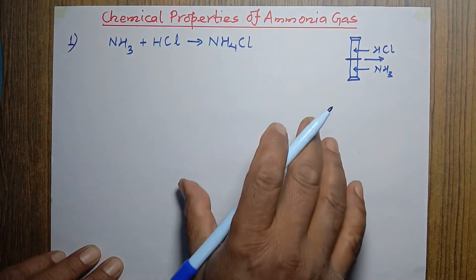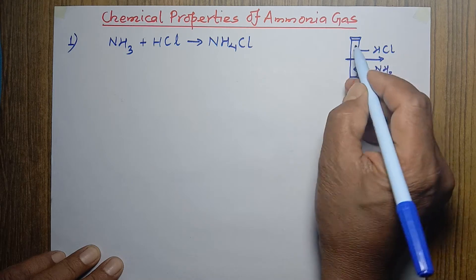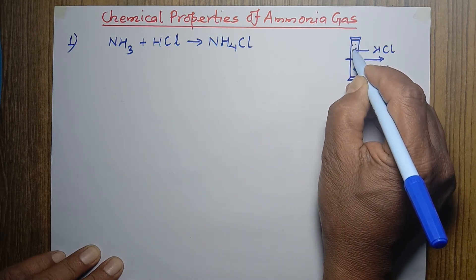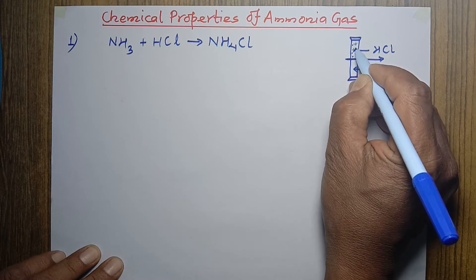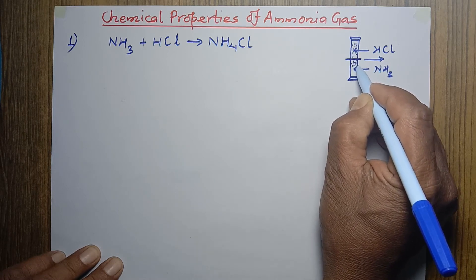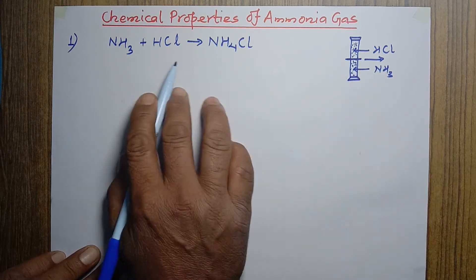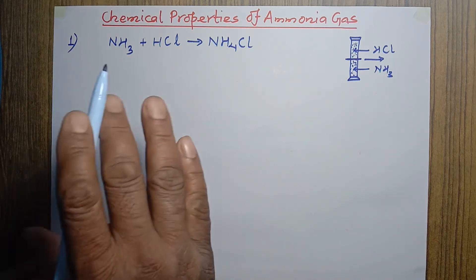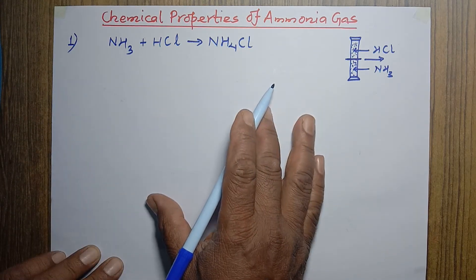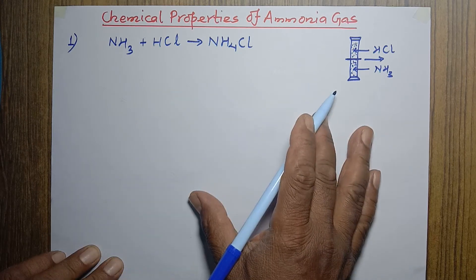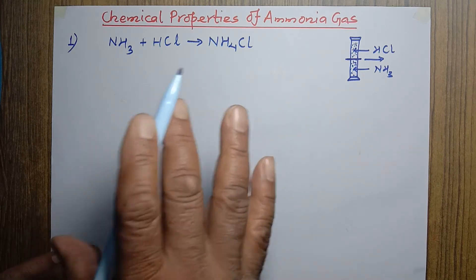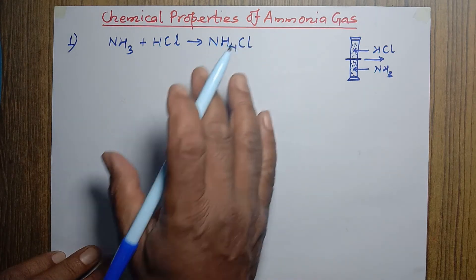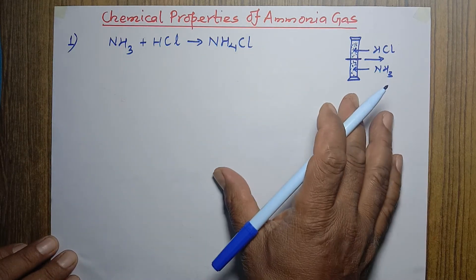This ammonium chloride is a white solid, and that's why the whole gas jar is found to be filled with white solid particles which look like fume. This fume is made up of ammonium chloride. So, ammonia gas reacts with hydrogen chloride gas to form ammonium chloride, which appears in the form of white fume made up of minute ammonium chloride particles. This is one of the chemical properties of ammonia.